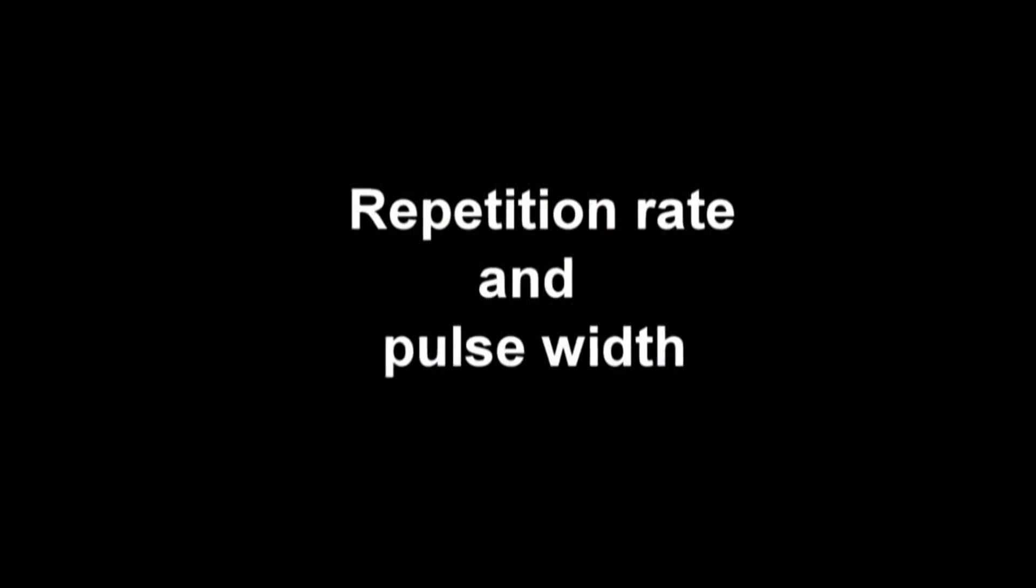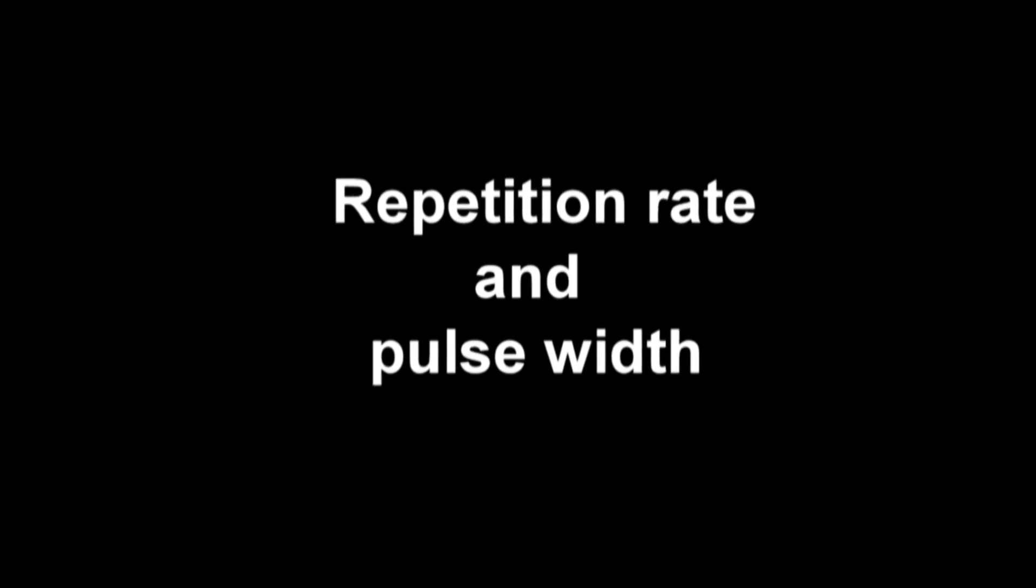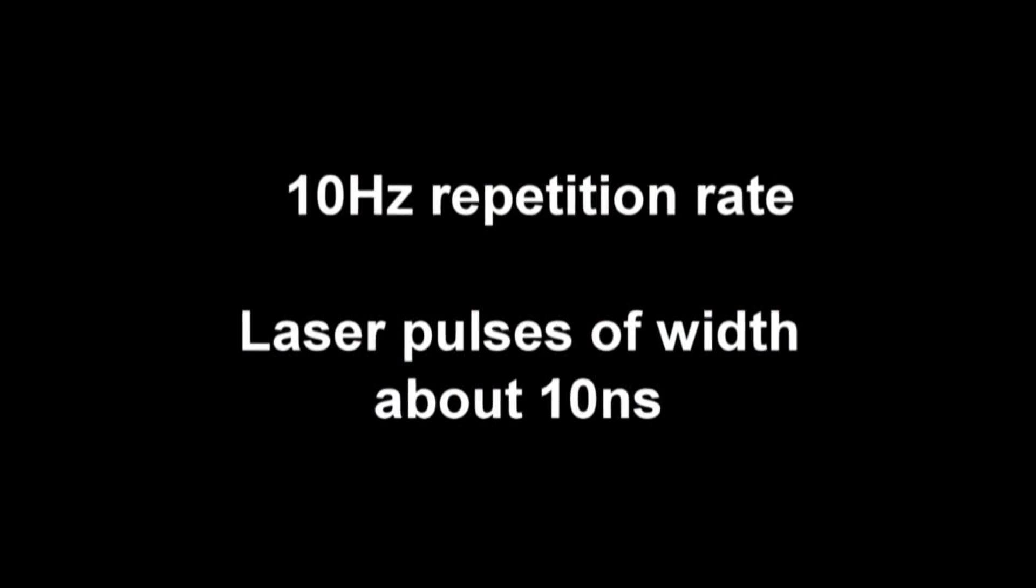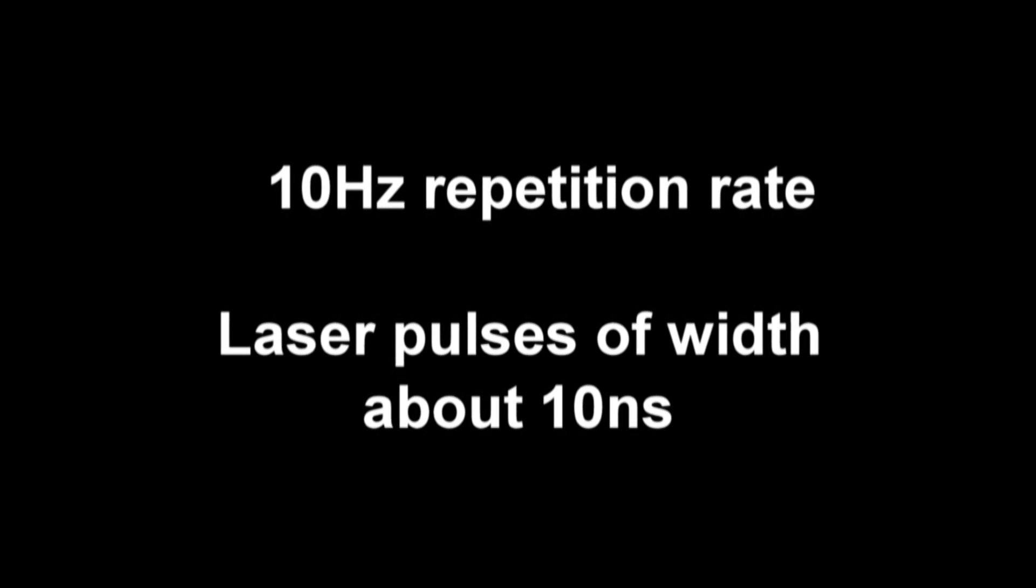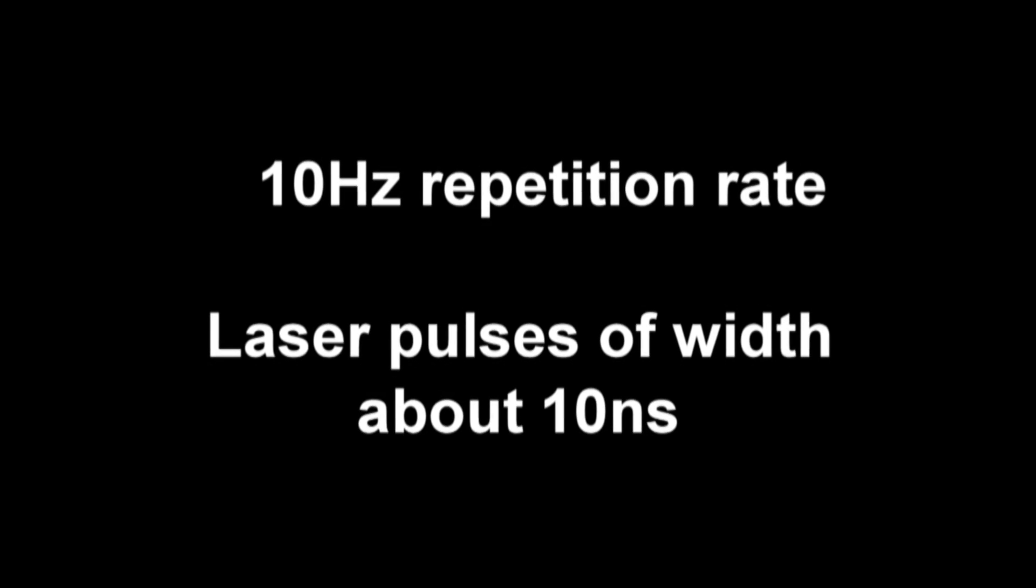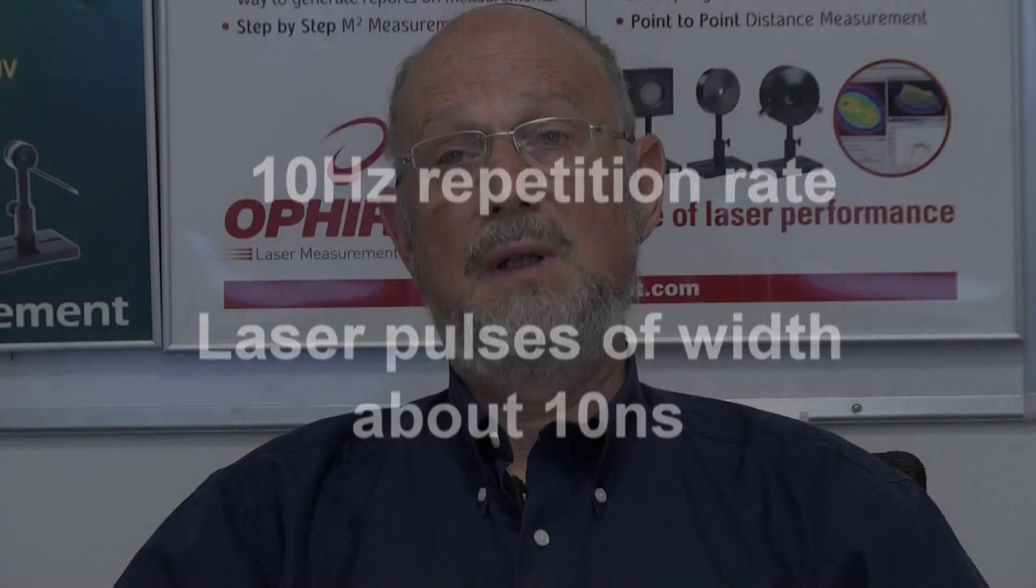Now there are other sources of error that are possible for pulsed lasers. When we want to measure the energy of a pulsed laser, there are two more things that have to be taken into account: the repetition rate and the pulse width. Now we usually calibrate our meters at 10 Hertz repetition rate and laser pulse widths that are rather small, about 10 nanoseconds. This is typical for commonly used YAG and harmonic lasers.